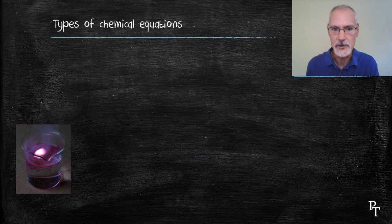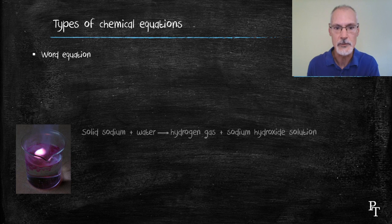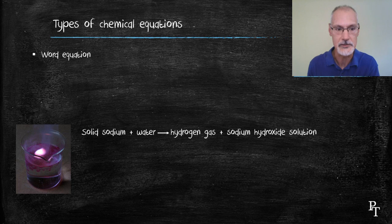Let's start off with several different ways that we can express a chemical reaction. One might be a word equation, where we write down the names of the substances involved. For instance, solid sodium and water get together to produce hydrogen gas and a sodium hydroxide solution.